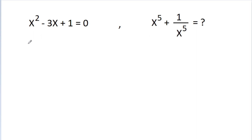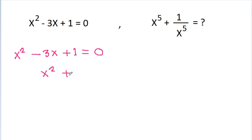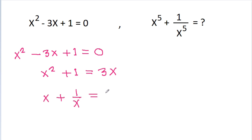We have given that x squared minus 3x minus 1 is equal to 0. Now we can get x squared minus 1 is equal to 3x, and if we divide by x then we can get x plus 1 by x is equal to 3. Let's call this Equation 1.